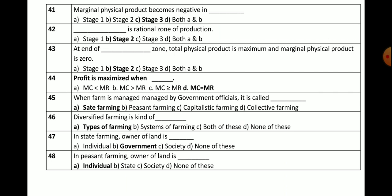Question number 43: At the end of which zone is total physical product maximum and marginal physical product zero? Options are stage 1, stage 2, stage 3, or both A and B. The correct answer is at the end of stage 2 — total physical product is maximum and marginal physical product is zero.